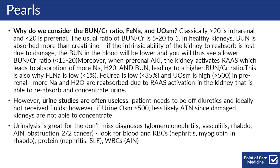So why do we consider the BUN to creatinine ratio, fractional excretion of sodium, and urine osms when working up AKIs? The usual ratio of BUN to creatinine, whether or not you have an AKI, is somewhere between 5:1 and 20:1. In healthy kidneys, BUN is absorbed more than creatinine. So if the intrinsic ability of the kidneys to reabsorb is lost due to some sort of damage, the BUN in your blood will be lower, and you will thus see a lower BUN to creatinine ratio, less than 15 to 20.